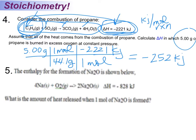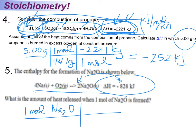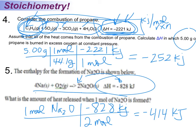Similarly, if we were finding it based on the oxygen, we would say for every five moles of oxygen we have negative 2,221 kilojoules — so we can treat this just like any other coefficient. The next problem: they say the enthalpy for the formation is shown, forming 4 to 1 to 2, and they ask what is the amount of heat released when one mole of sodium oxide is formed. We start stoichiometry with one mole of Na₂O, and for every two moles we have negative 828. So you're dividing by two — negative 414 kilojoules is the answer.